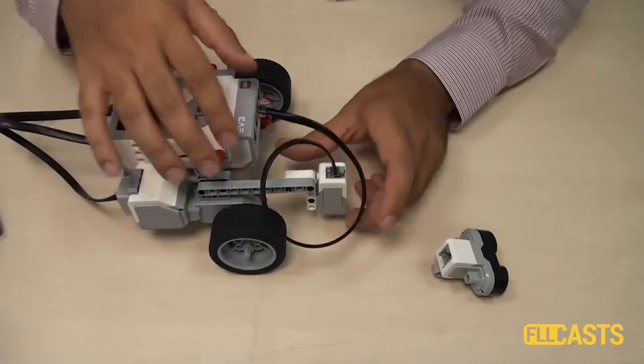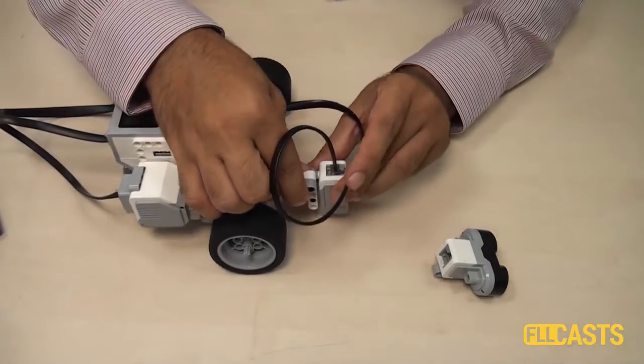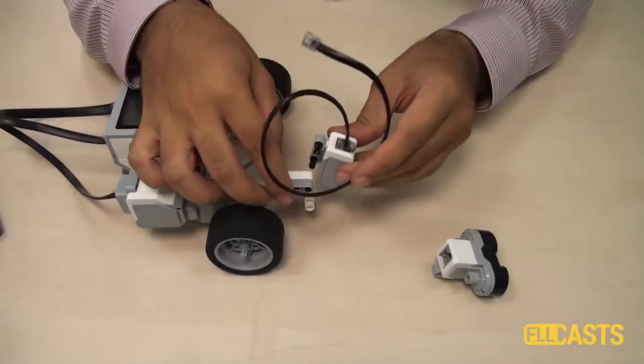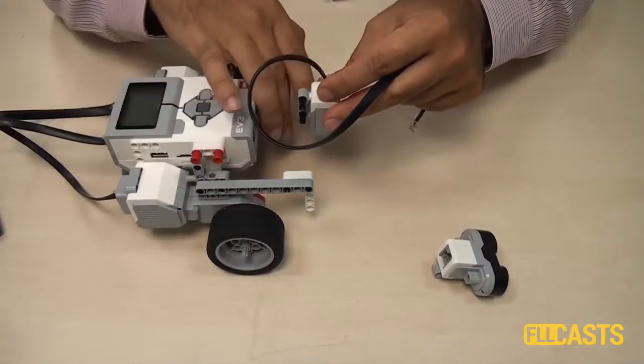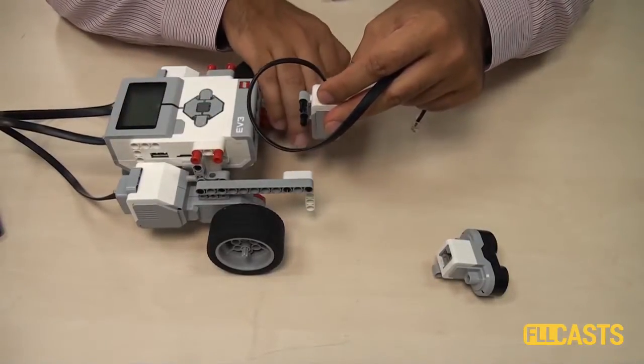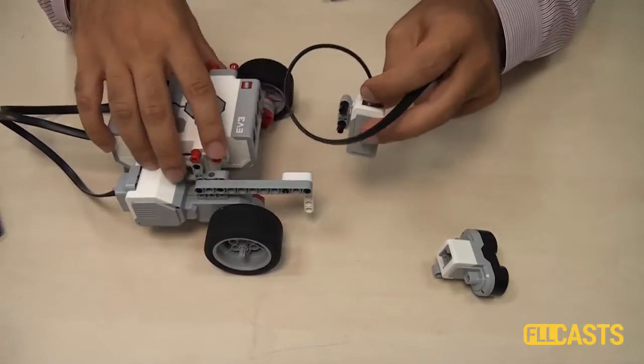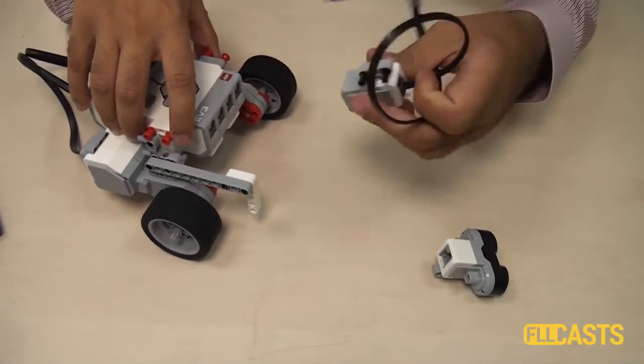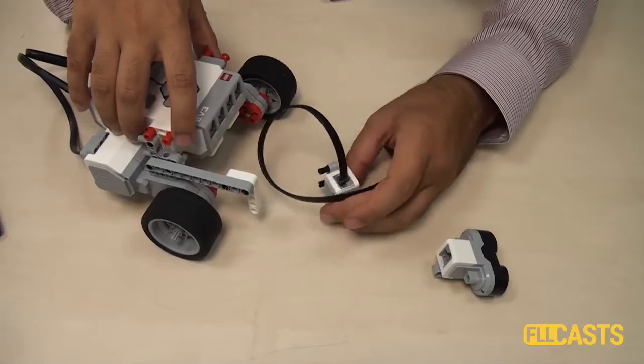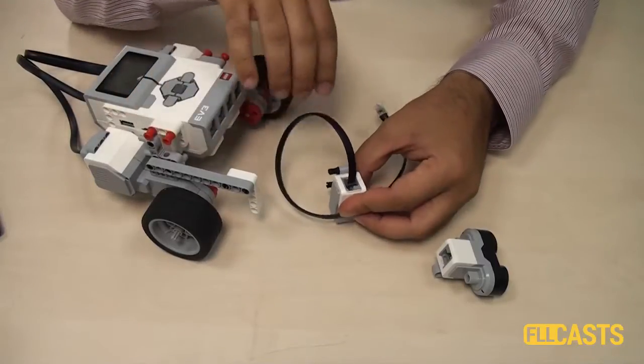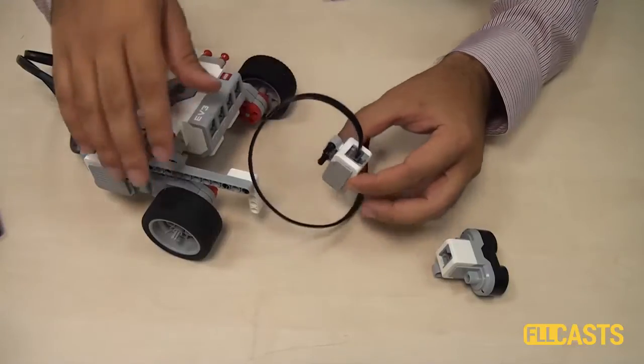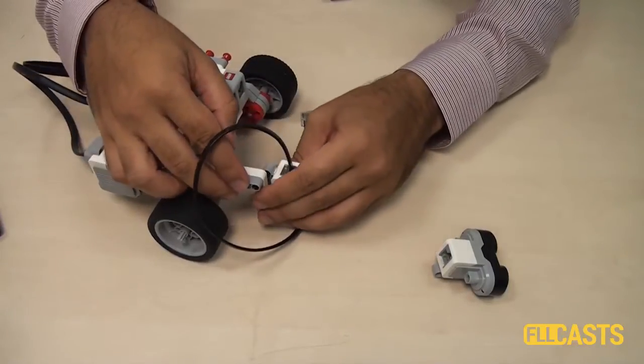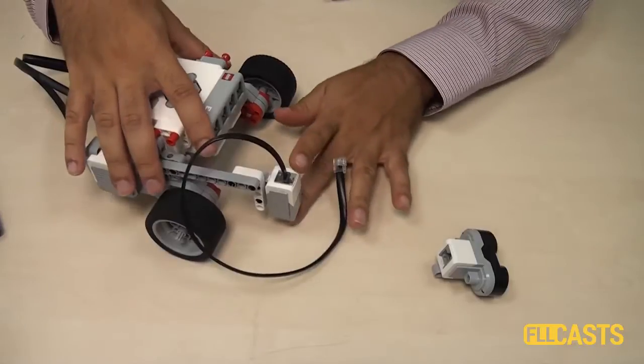You cannot place the sensor very high like this, for example, because it will not detect the lines that are on the table. And you can't place the sensor very near to the table because there is not enough room for the sensor to work correctly. You must place it at about a centimeter high, half an inch.